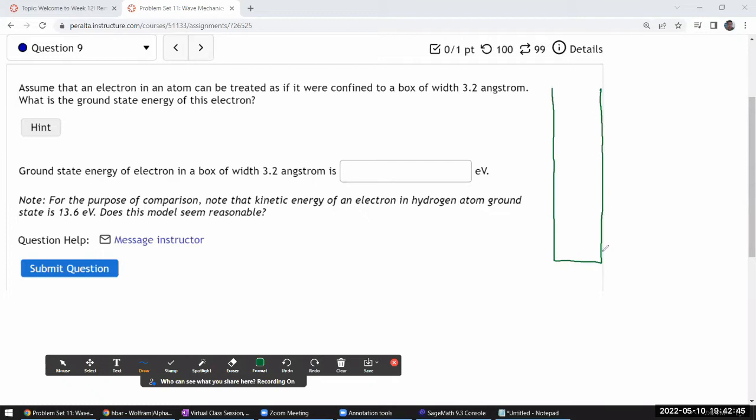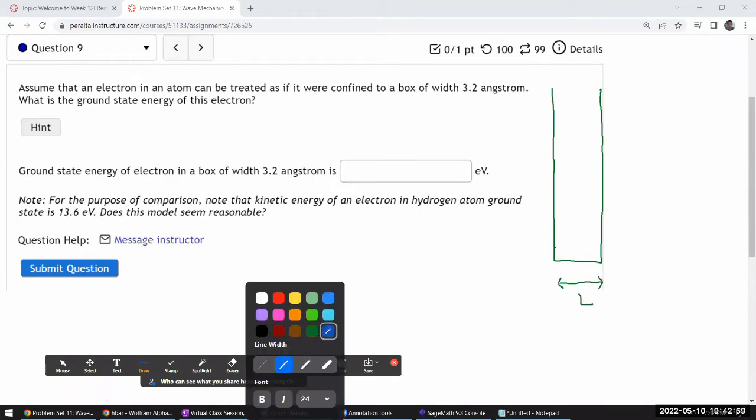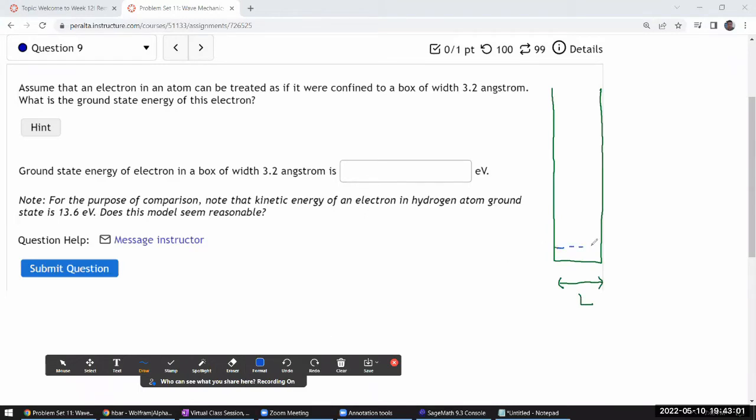As in the potentials on the left or right hand side, it's so high as to be insurmountable. The box has some size L and there are certain energy levels that you are going to be able to fit a standing wave solution to. So there's a ground state solution that will have a waveform that looks like this. There will be the first excited state that will have one more node in between. And so on. It goes from here. And it asks, what is the ground state energy of this electron?